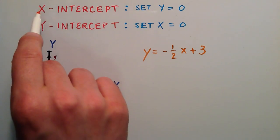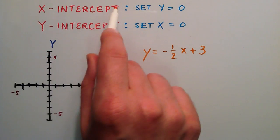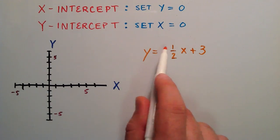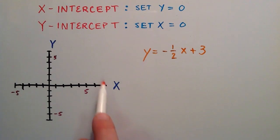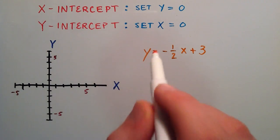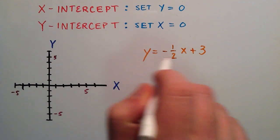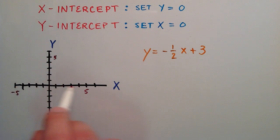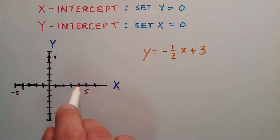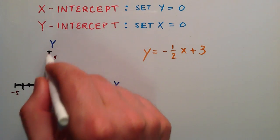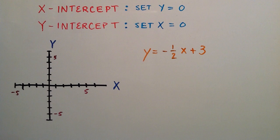The x-intercept is going to be the point that our line crosses the x-axis. The y-intercept is going to be the point where our line crosses the y-axis. So the x-intercept is simply a point on the x-axis, and the y-intercept is simply a point on the y-axis where our line crosses.